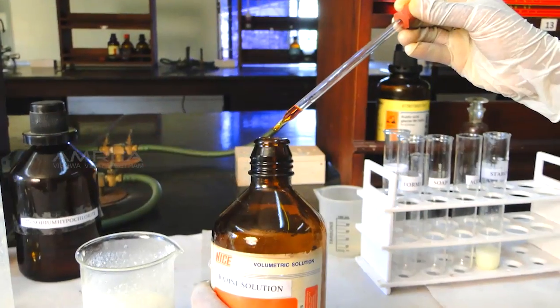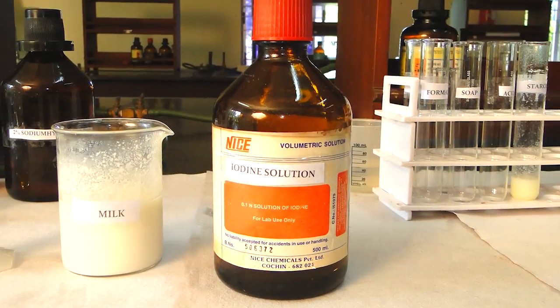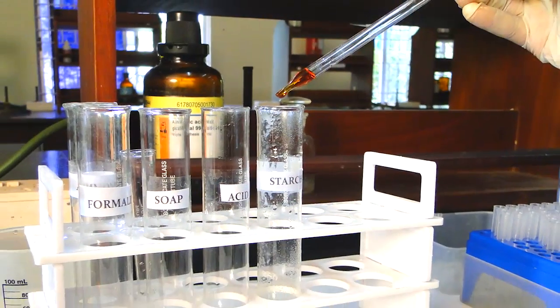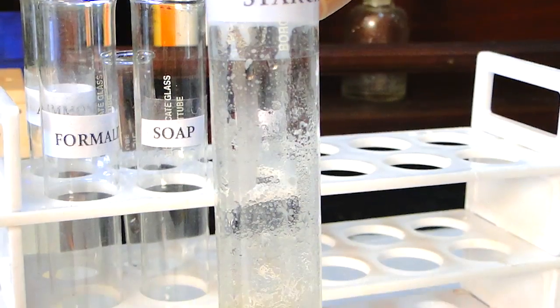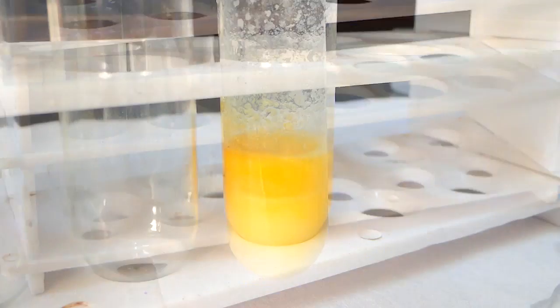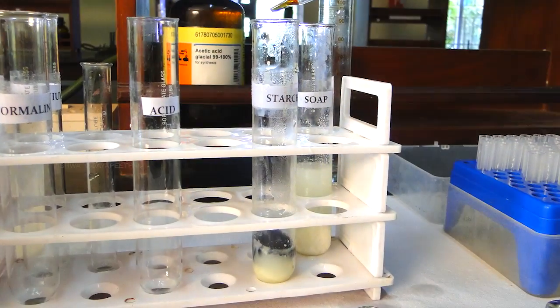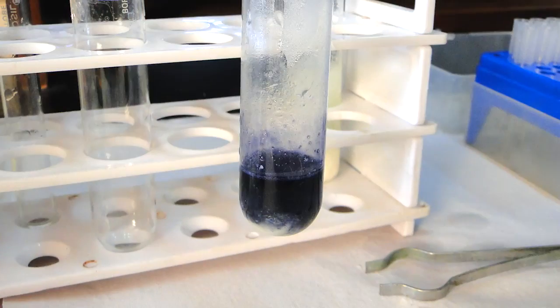Using a dropper, add 2 to 3 drops of iodine solution to the test tube and shake it well. If the color of the milk solution turns yellow, it indicates the absence of starch. Dark blue color indicates the presence of starch in milk.